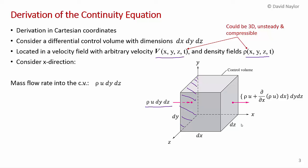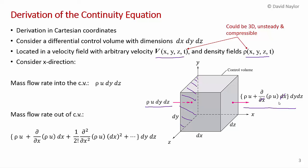For the mass flow rate out at x plus dx, we do a Taylor series. We take rho u, and then the partial derivative of rho u with respect to x, times dx. The higher-order terms — (1/2!) times the second derivative of rho u times dx², (1/3!) times the third derivative, etc. — vanish much more quickly than the linear terms when dx goes to zero as we consider flow at a point. So we're just left with the linear derivative term.